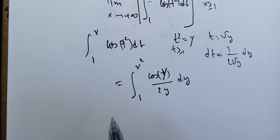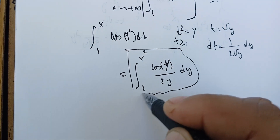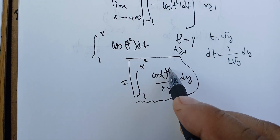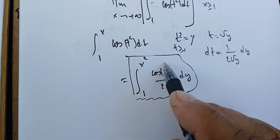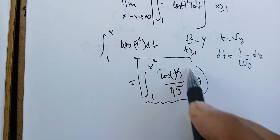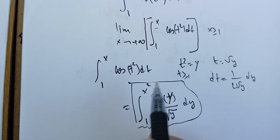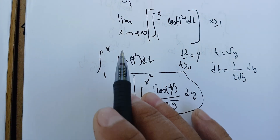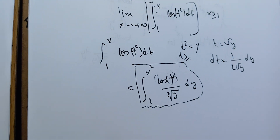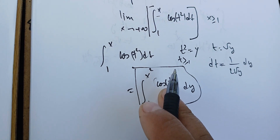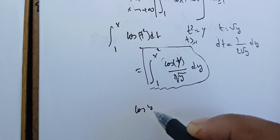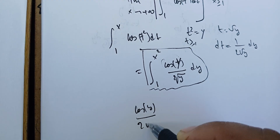So this is our transformed integral. Before we take the limit, we don't know the behavior of 1 over square root of y and we don't know its primitive, so we're going to use some kind of comparison to conclude that this integral exists. That's why we're going to use integration by parts on cosine(y) over 2 square root of y, between 1 and x squared.